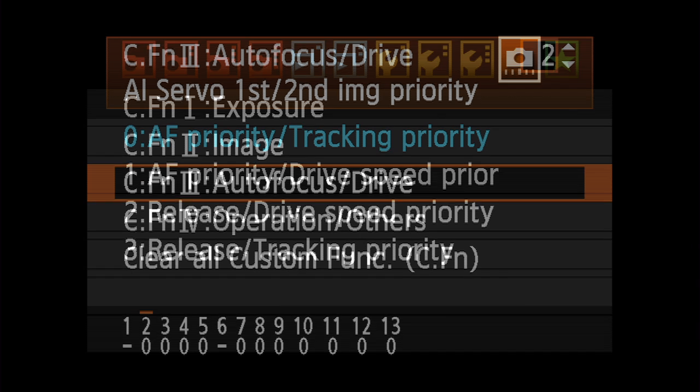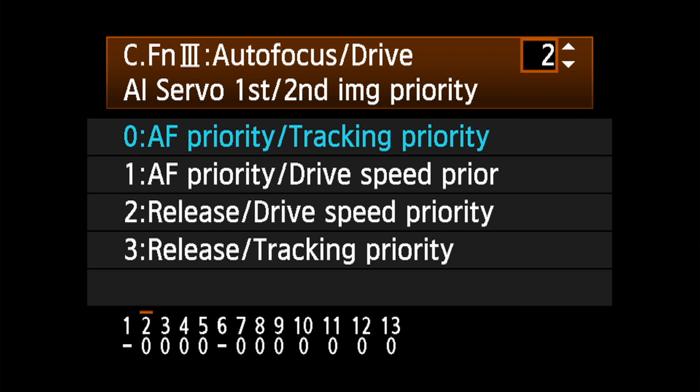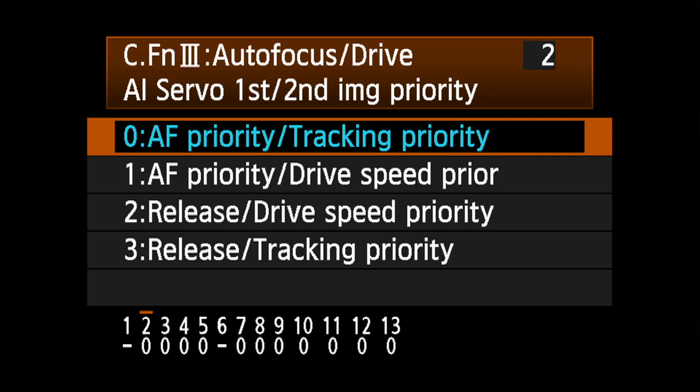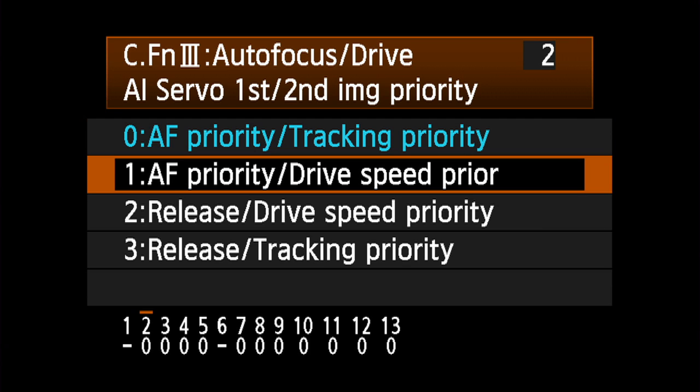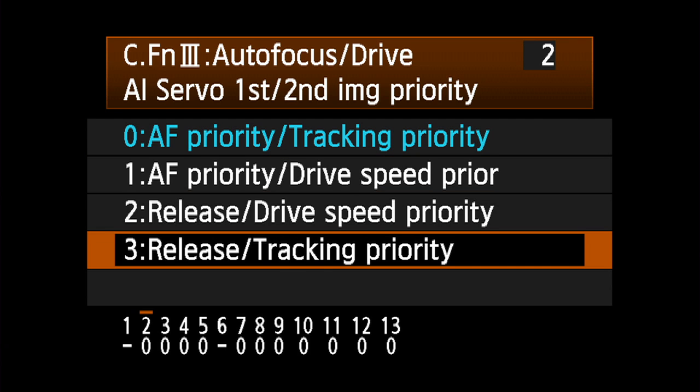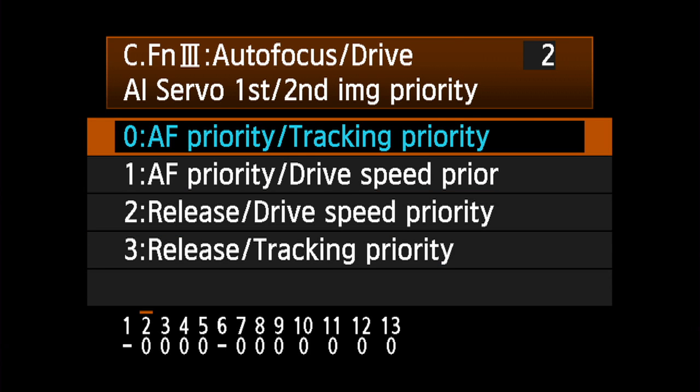AI Servo First and Second Image Priority tells the camera how you want it to respond in the first shot in a sequence and in any subsequent shots in a continuous sequence. The items before the slash refer to the first picture and the items after the slash to subsequent shots in a sequence.